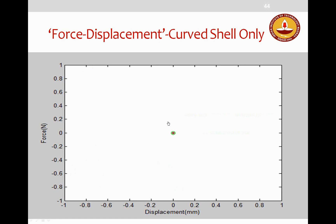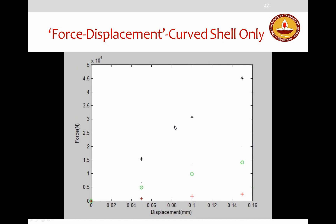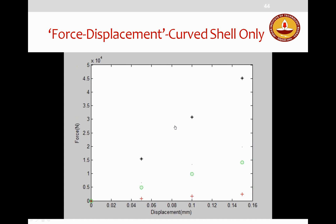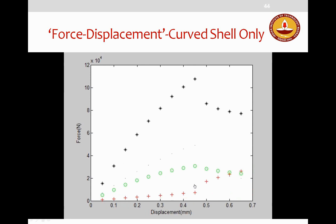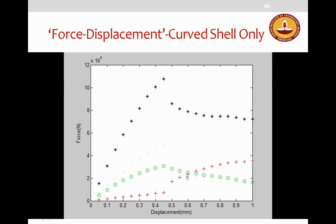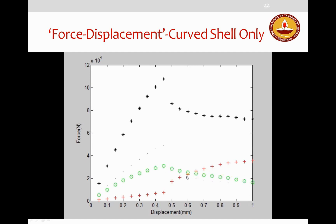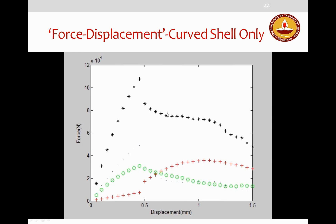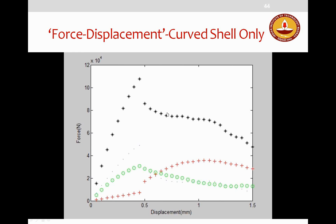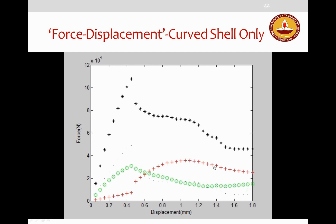Another animation shows the contribution of out-of-plane walls to total load-carrying capacity. The pushover curve shows that once in-plane walls experience a drop in load-carrying capacity, out-of-plane walls redistribute forces and take on load. Only after the out-of-plane wall fails can the structure be said to have completely failed.